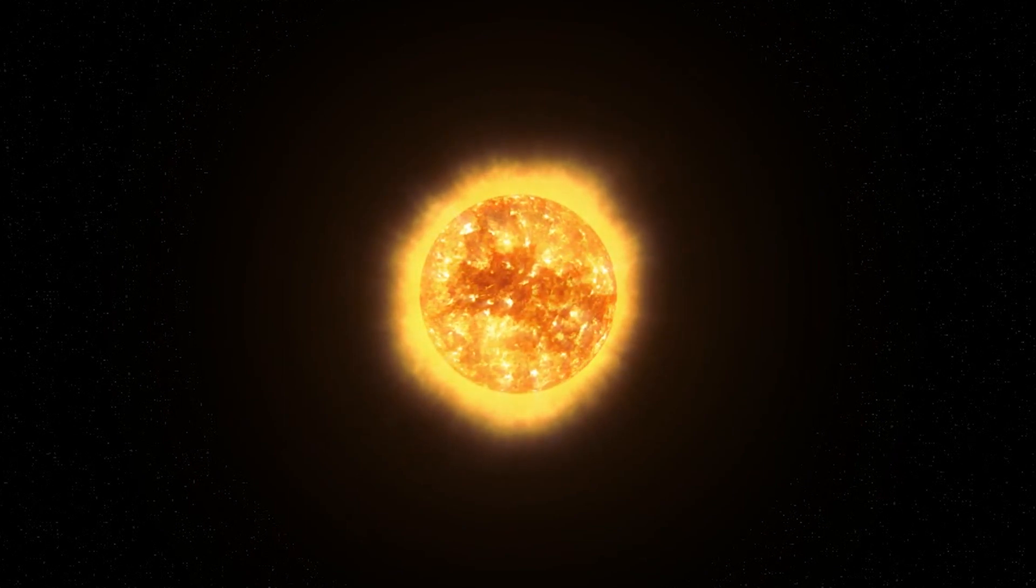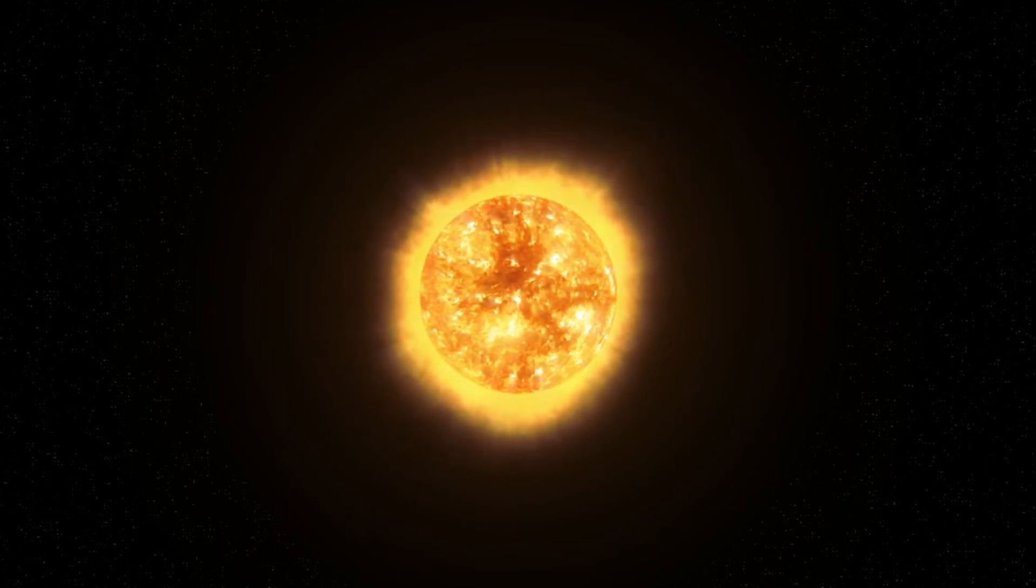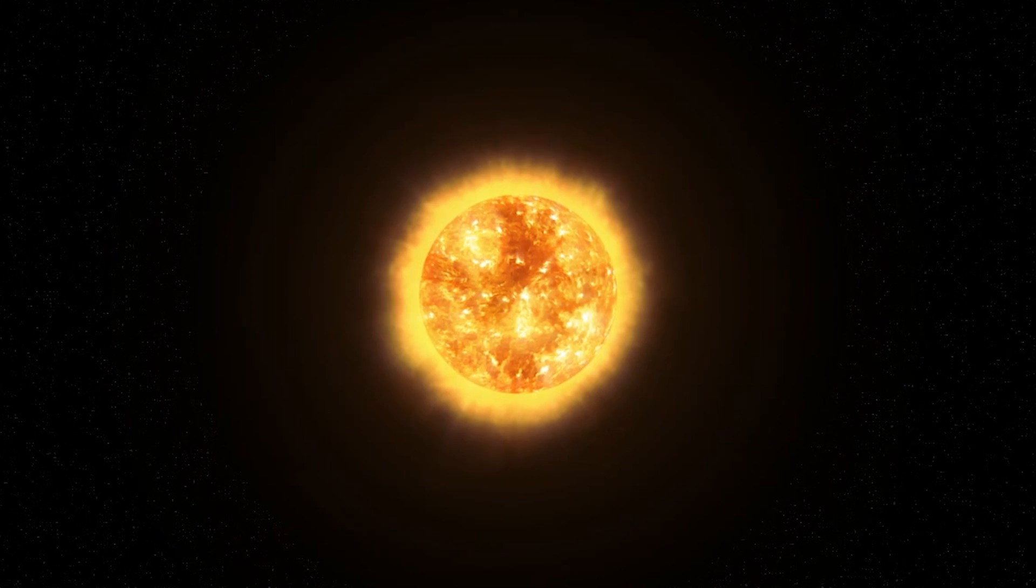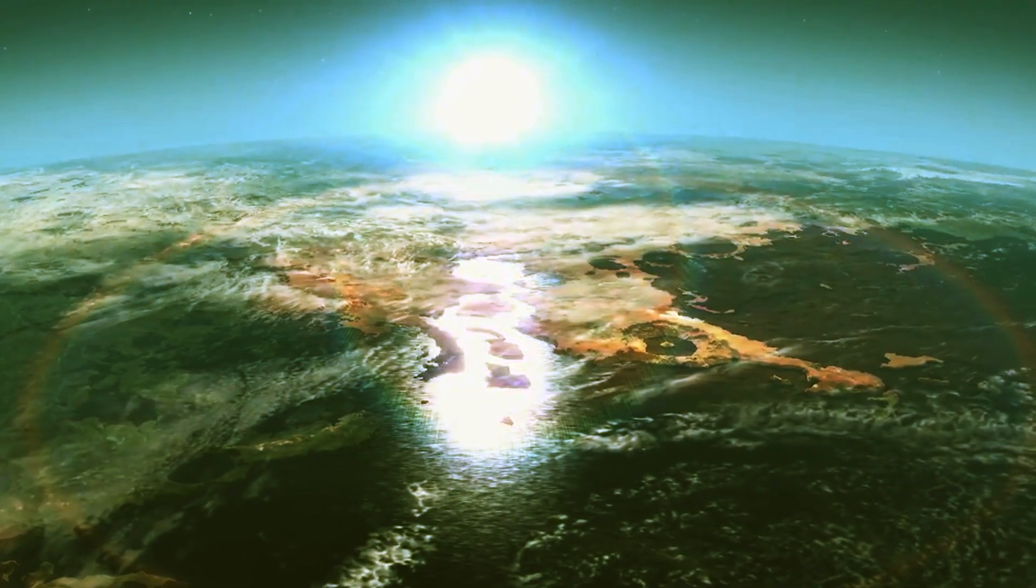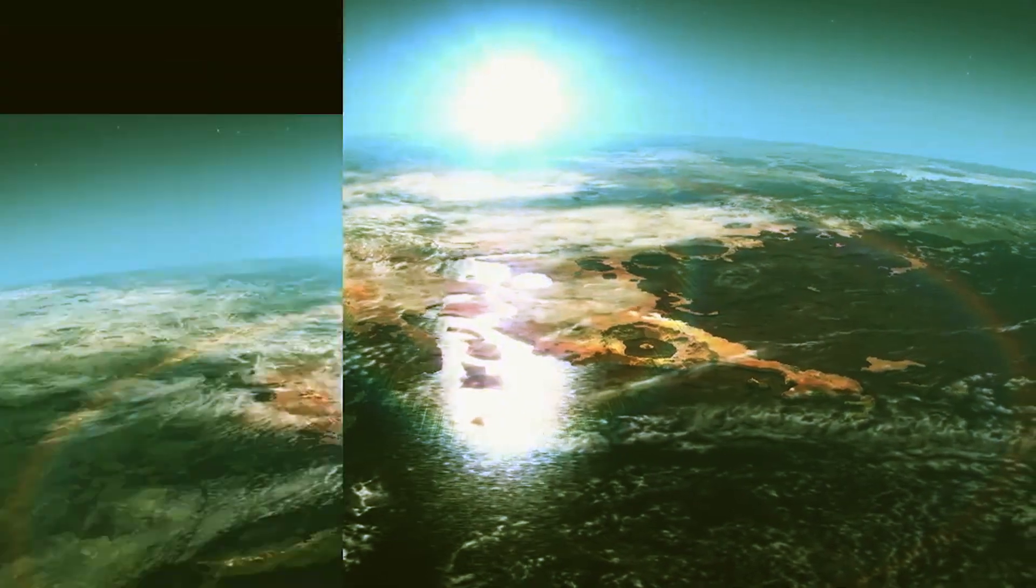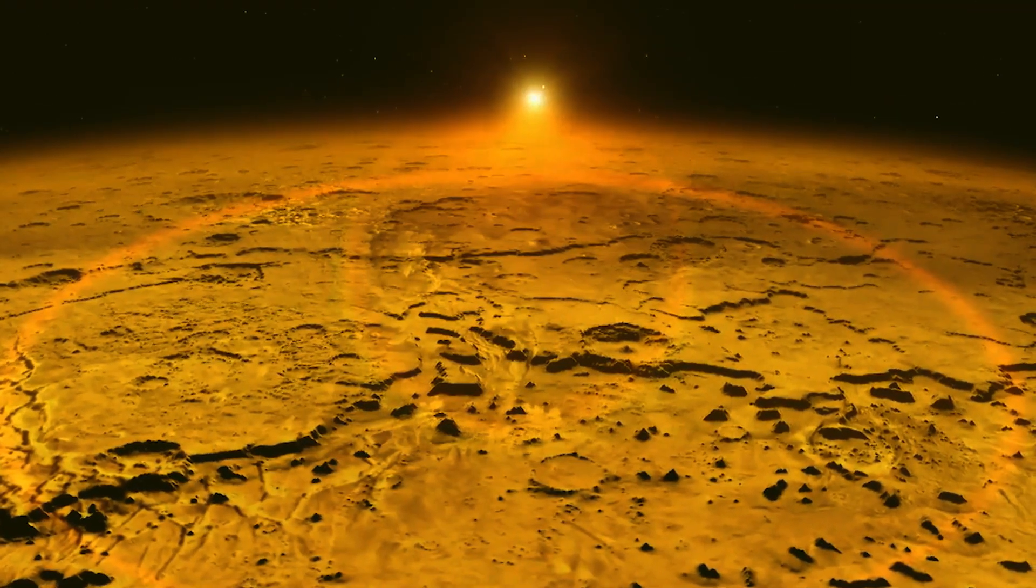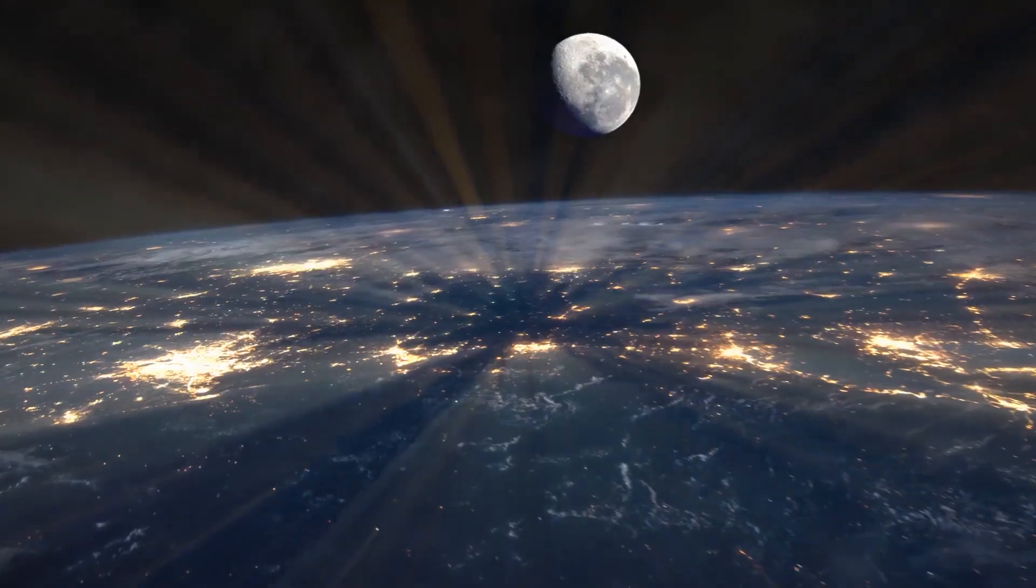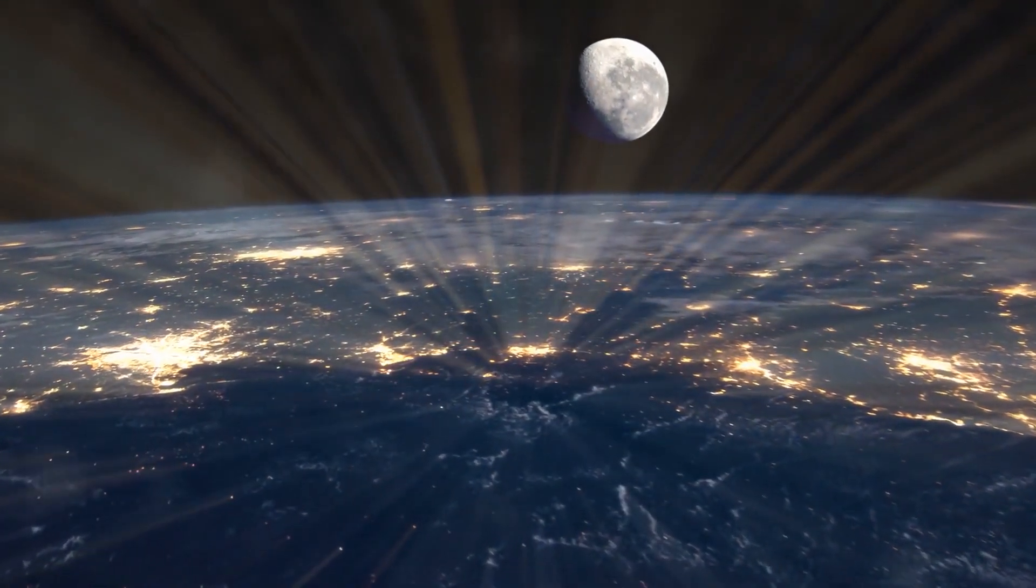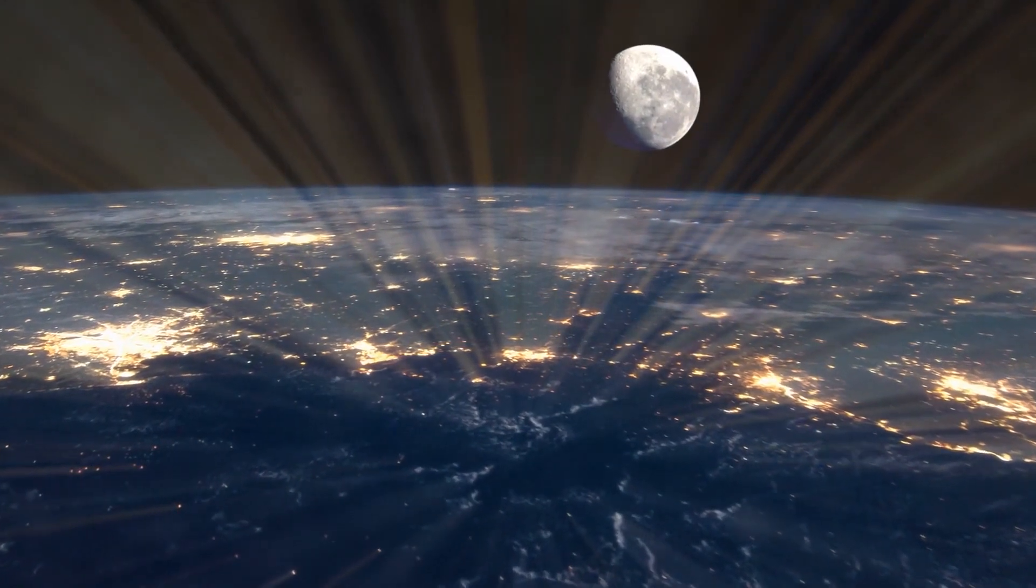NASA scientists fear it could be a repeat of the Dalton minimum which happened between 1790 and 1830, leading to periods of brutal cold, crop loss, famine and powerful volcanic eruptions. Temperatures fell by up to 2 Celsius over 20 years, devastating the world's food production.